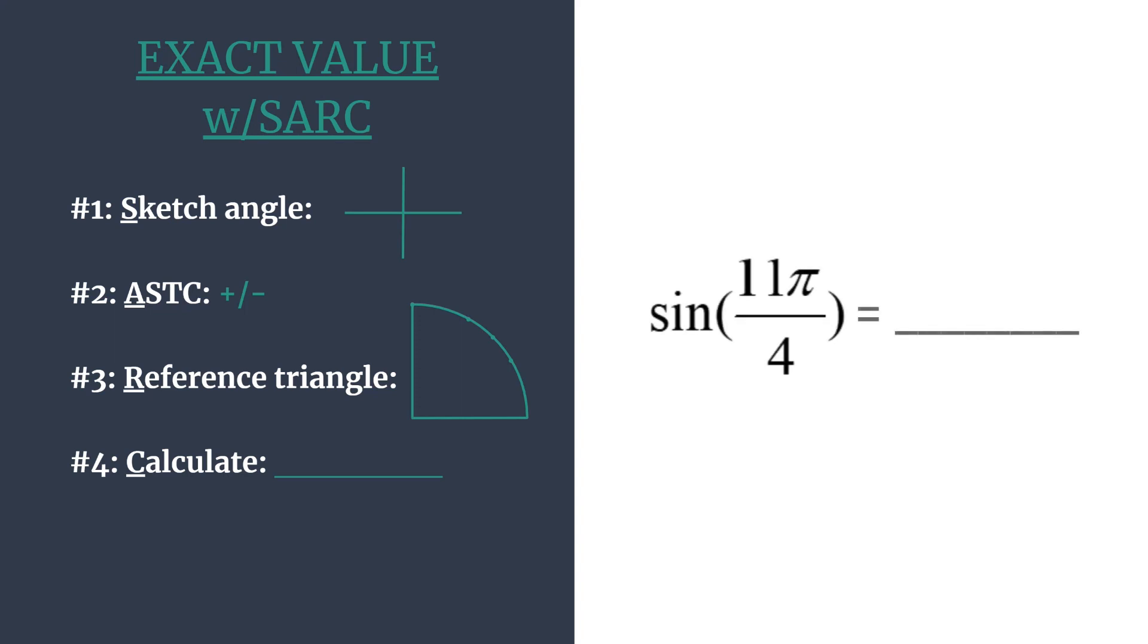So we're going to do that for sine of 11π over 4. As we look at this exact value, we see that 11π over 4 is more than one rotation. It's greater than 2π. So before we sketch this angle, we actually want to find what's called a coterminal angle. We simply do that by subtracting 2π or its equivalent. So we can take 11π over 4 and we're going to subtract a rotation, 2π. But we want it to have a common denominator of 4, so we'll write 2π as 8π over 4.